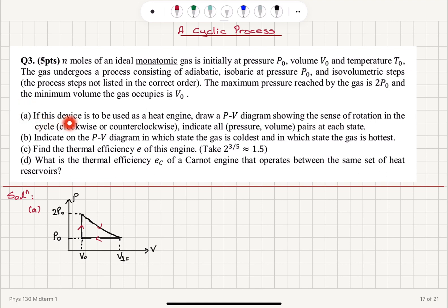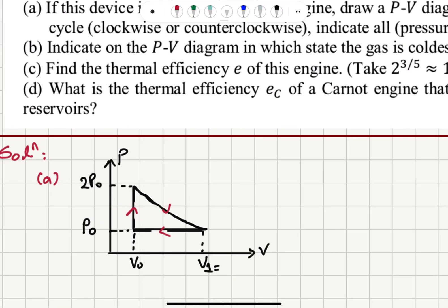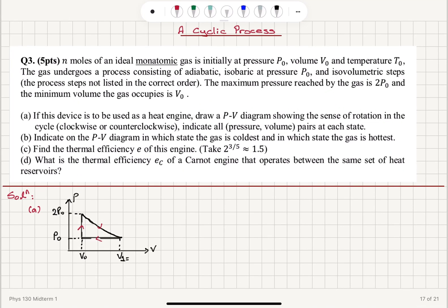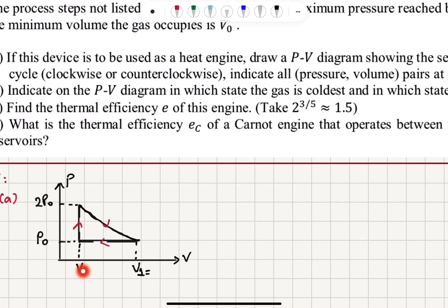Part A: If this device is to be used as a heat engine, draw a PV diagram showing the sense of rotation in the cycle — clockwise or counterclockwise — and indicate all pressure-volume pairs at each state. In this process, we have an isobaric step at pressure P0. We have the minimum volume V0, an adiabatic process to a certain volume V1, and then an isobaric process at P0 back to volume V0.